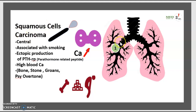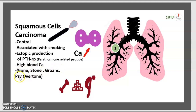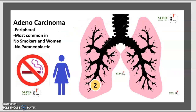Squamous cell carcinoma is central and associated with smoking. There is ectopic production of parathyroid hormone-related peptide (PTHrP), leading to high calcium levels in the blood. Because it is linked to parathyroid, think about bones, stones, and psychic/neurological overtones.